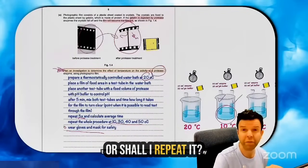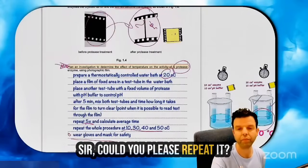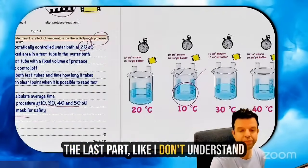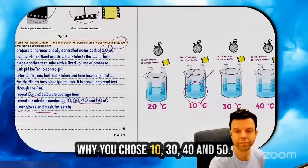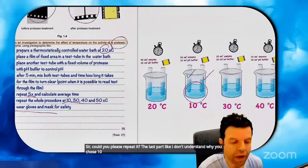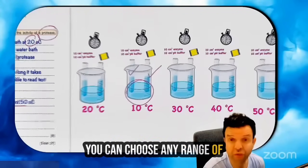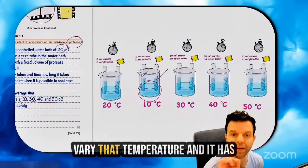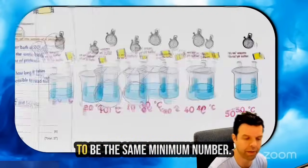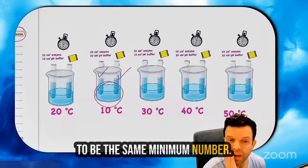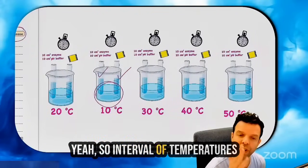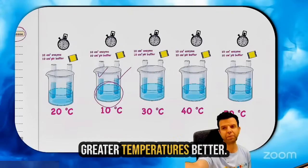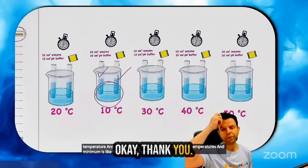Sir, could you please repeat the last part? I don't understand why you chose 10, 30, 40, and 50 degrees. You can choose any range of temperatures — you just need to vary that temperature, and the minimum number of temperatures is about five. A greater number of temperatures is better.